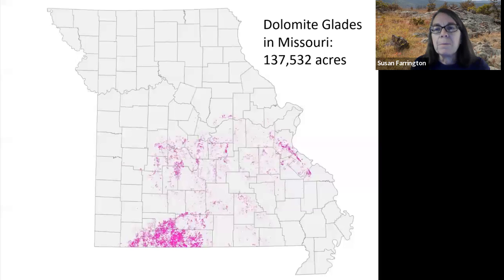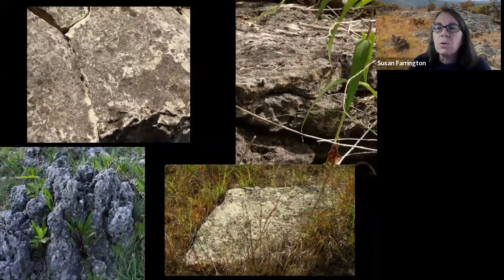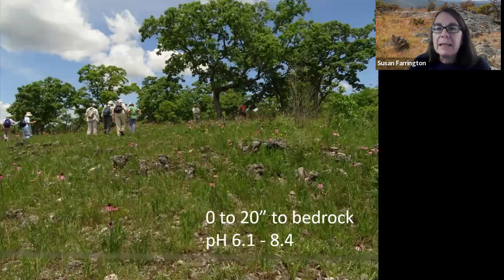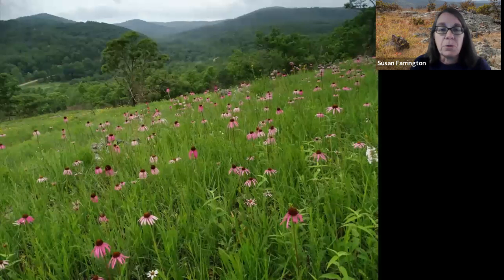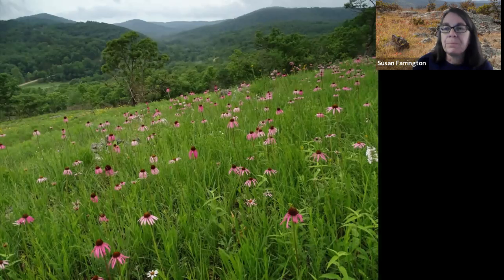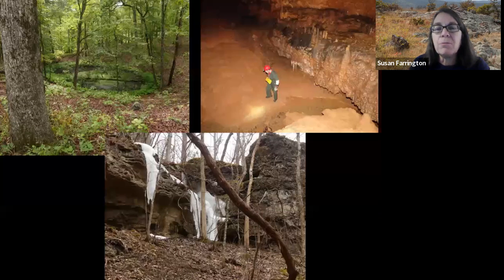Dolomite glades are scattered throughout much of the Missouri Ozarks and the Ozark border country, just north of the Missouri River. Dolomite is a type of magnesium-rich limestone — a carbonate sedimentary rock consisting of double carbonates of calcium and magnesium. Because dolomite is a form of limestone, much of what I'm going to tell you about dolomite glades is also true for limestone glades.